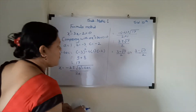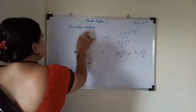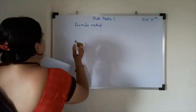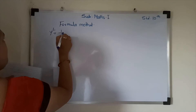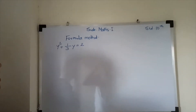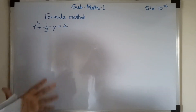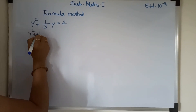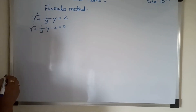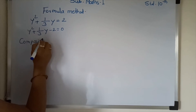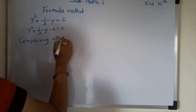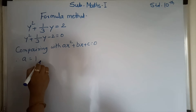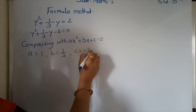I am solving one more example by this method. The example is y square plus 1 upon 3 times y is equal to 2. Rearranging to standard form: y square plus 1 upon 3 y minus 2 is equal to 0. Then comparing with ax square plus bx plus c equal to 0. Therefore, a is equal to 1, b is equal to 1 by 3, and c is equal to minus 2.